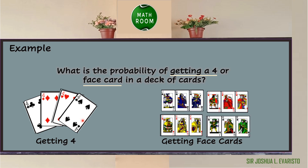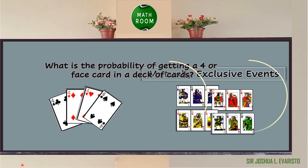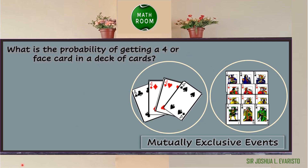The possible outcomes of event B are the jack, queen, and king of clubs, the jack, queen, and king of hearts, the jack, queen, and king of diamond, and the jack, queen, and king of spade. We have 12 possible outcomes for event B. Notice that no possible outcome is the same in both event A and event B. So we can say that this is mutually exclusive events. Moreover, we can illustrate it using two circles without overlapping.